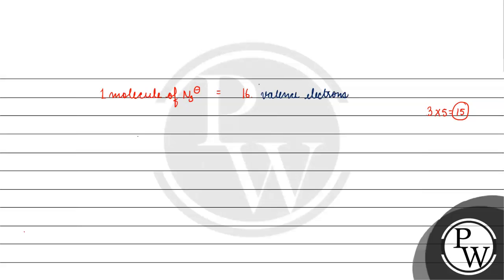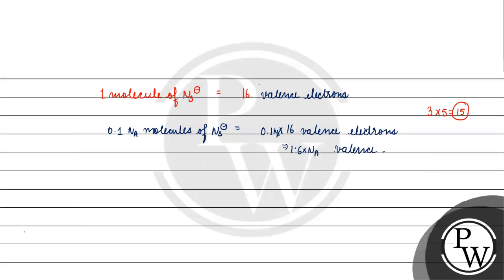So if we have 0.1 × Avogadro's number molecules of N₃⁻, the total number of valence electrons = 0.1 × 16 × Avogadro's number = 1.6 × Avogadro's number of valence electrons.